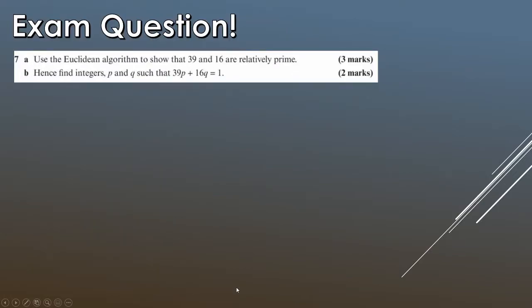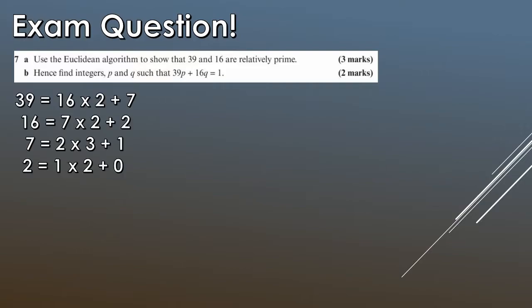Let's look at an exam question. These questions are usually 5 marks in total — sometimes a full 5-marker, sometimes split as a 3-marker and a 2-marker. Part A asks us to use the Euclidean algorithm to show that 39 and 16 are relatively prime, meaning GCD equals 1. I've done it here step by step, and we obtain that the last non-zero remainder is 1, so they are relatively prime.